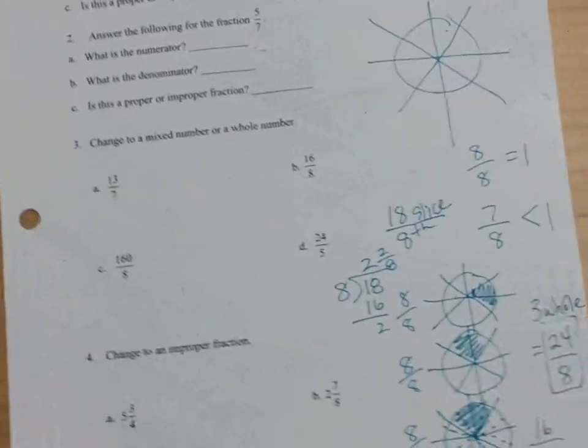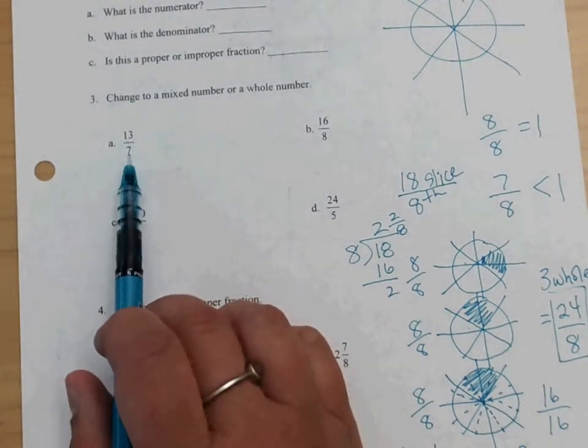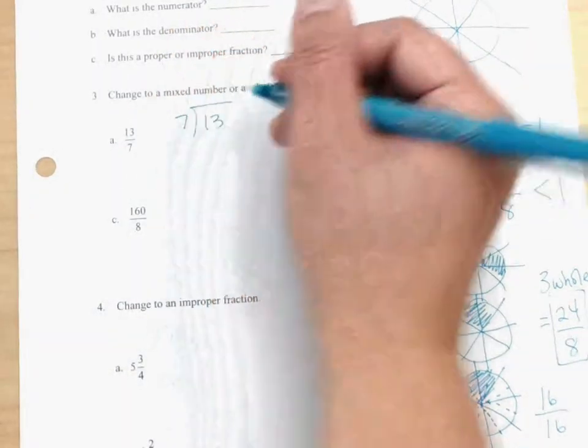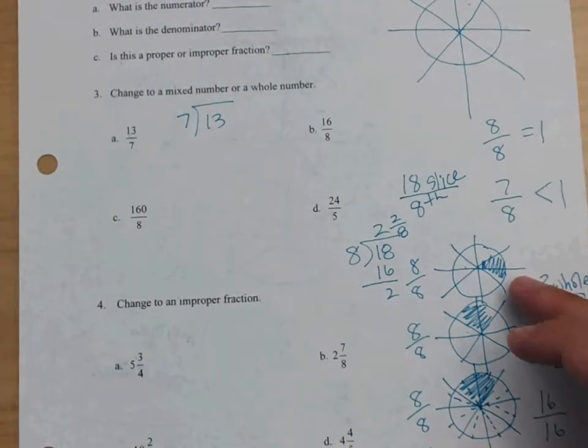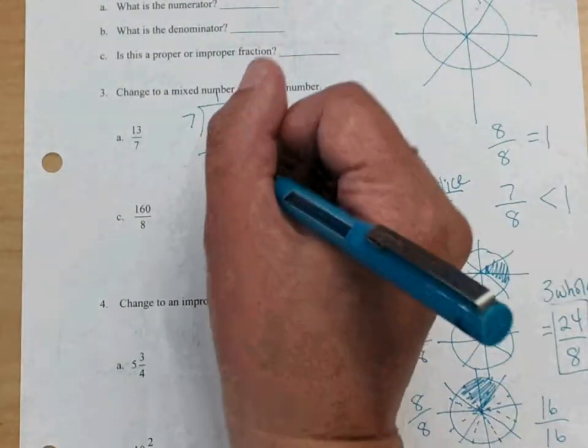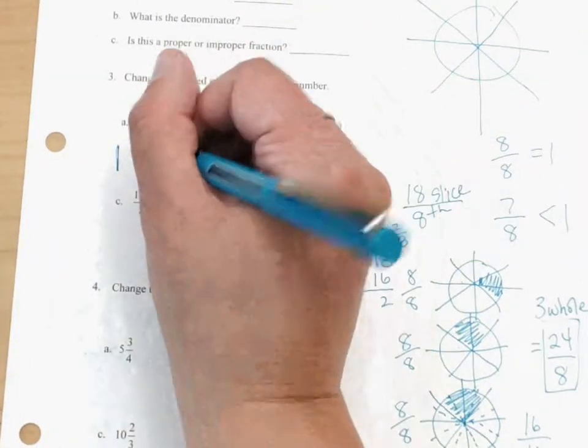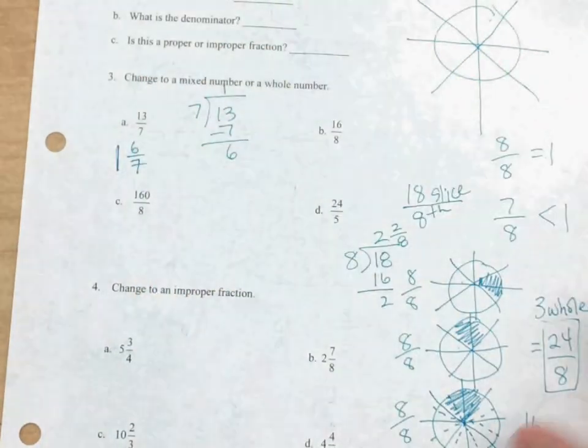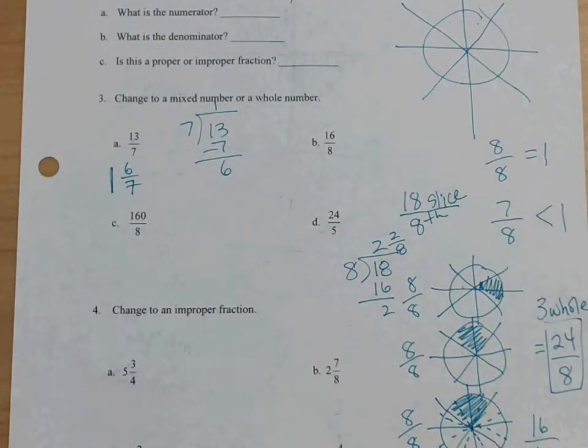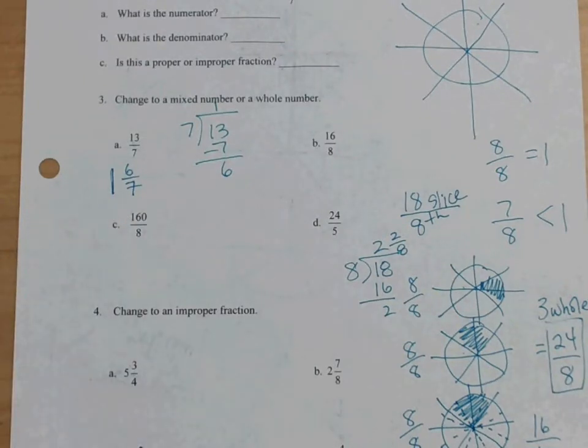When we change from eighteen eighths into two and two eighths, we just divide. Eight is the divisor into eighteen. So that's what we're doing with improper fractions. Let's go back to this example here. Thirteen sevenths. All we would do is take seven into thirteen. How many times does seven go into thirteen? Only one time. And then what's our remainder? Six. So our whole number is one, our remainder is six. Six sevenths. And you'll notice that anytime you do this, you should end up with a whole number and then a proper fraction. That would be a mixed number.